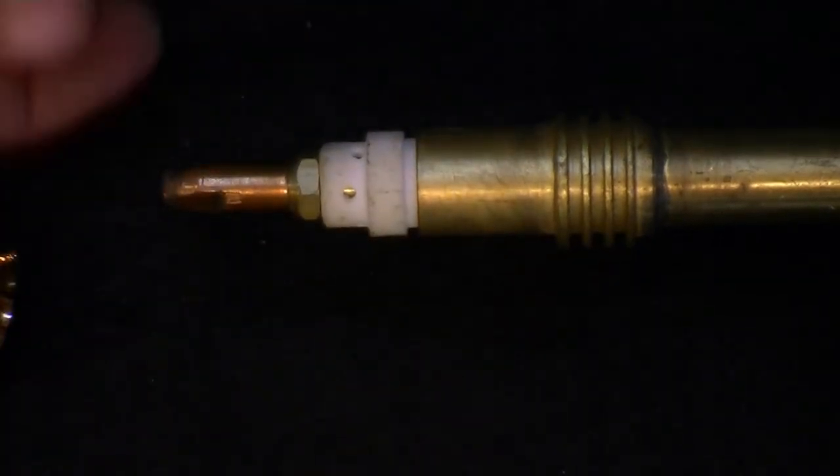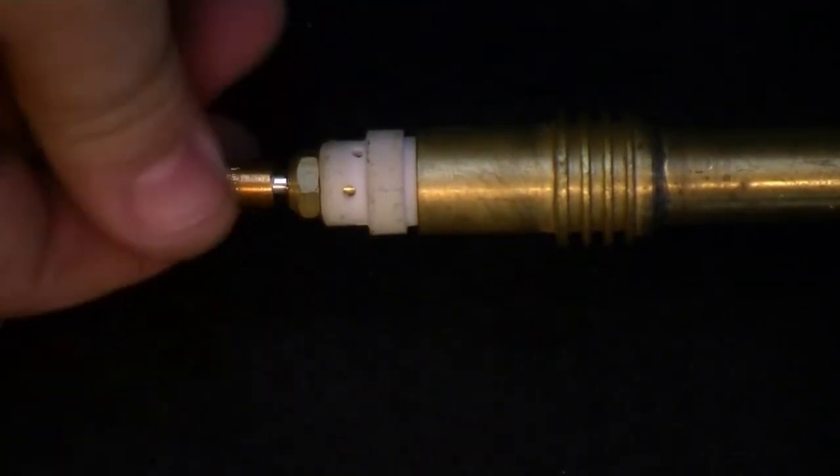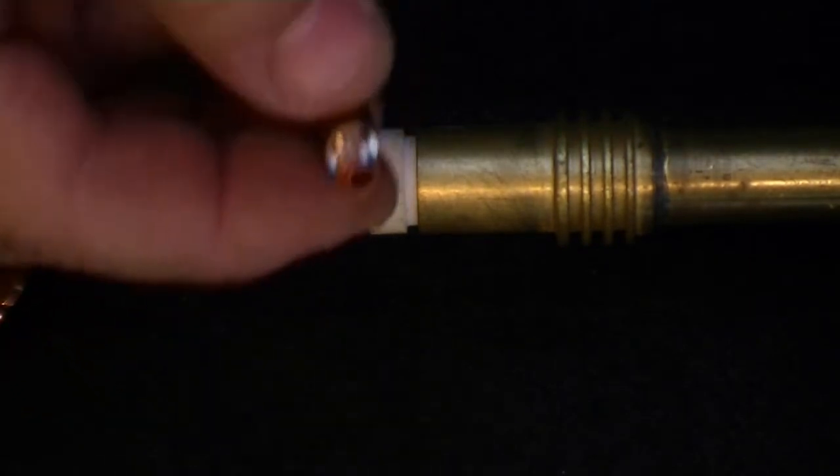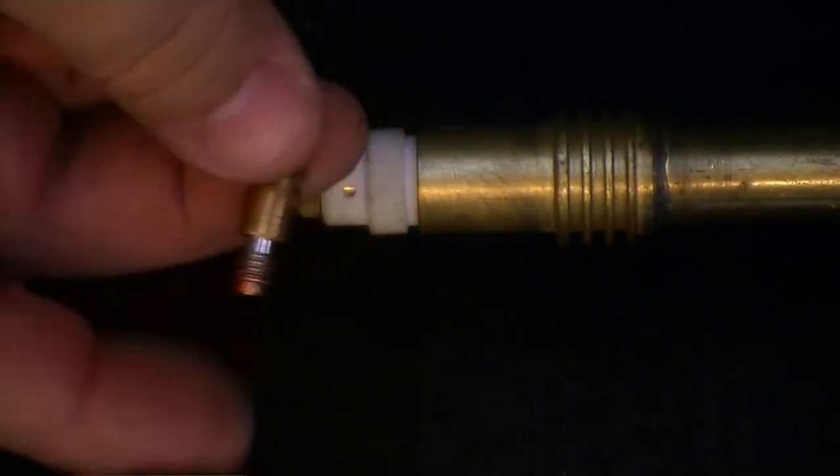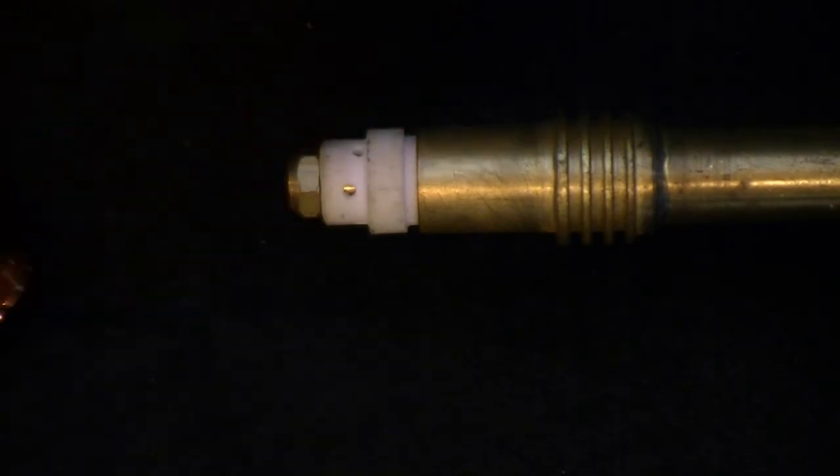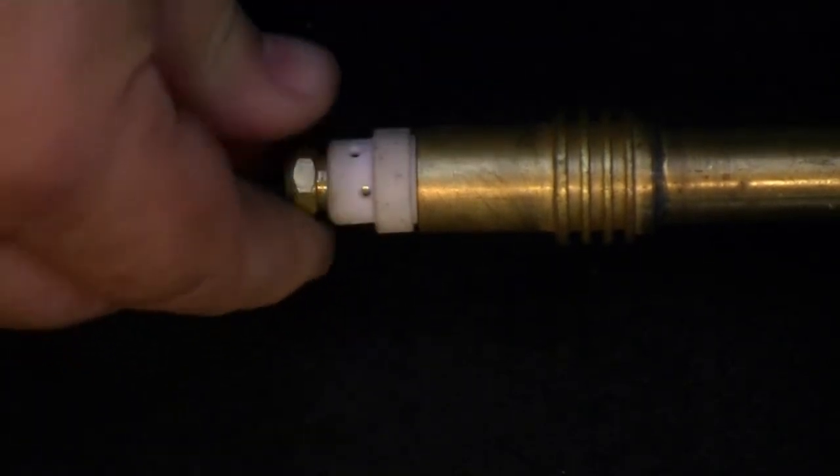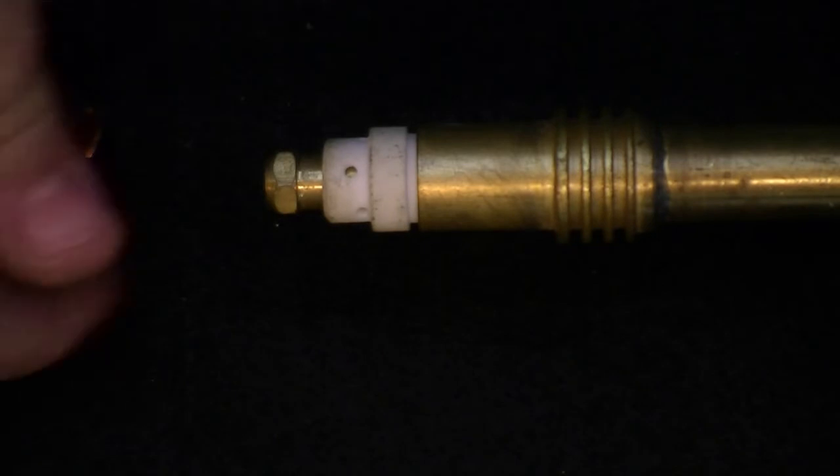Next we have the contact tip. The standard tip that comes with this gun is a .040 tip. When welding aluminum, you must select at least one size larger tip than the wire diameter. The gun liner and diffuser is held in place by the contact tip holder.